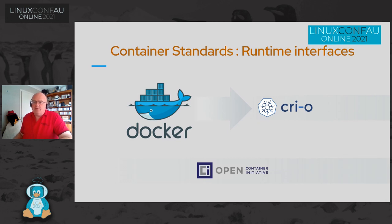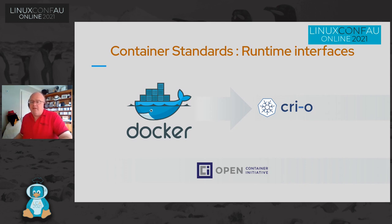One thing in the container ecosystem is the shift away from Docker everything to container standards. The Open Container Initiative has defined a thing called CRI-O as a standard interface for starting and stopping a container image. CRI-O is quite critical because it means that behind the scenes you can have any container runtime as long as it's CRI-O compatible. CRI-O's main focus is around Kubernetes, because at the end of the day Kubernetes simply needs to be able to start and stop containers.